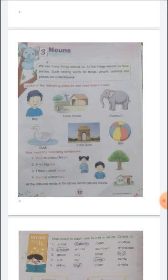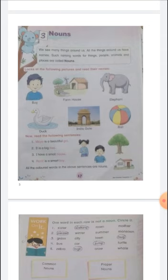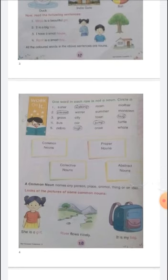Look at the following picture and read these names: boy, farmhouse, elephant, duck, Indian Gate, ball. In the following sentences, the red or pink colored word is a noun. For example: Maya is a beautiful girl. It is a big tree. I have a small house. Ronit is a smart boy. All the colored words in the above sentences are nouns.